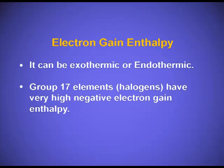Group 17 elements have very high electron gain enthalpy. Notably, the electron gain enthalpy of chlorine is higher than that of fluorine, despite fluorine being the most electronegative element. The reason is that fluorine has a smaller atomic radius than chlorine, so the incoming electron experiences higher inter-electronic repulsion in fluorine. In chlorine, the larger size accommodates the incoming electron better, with less inter-electronic repulsion.